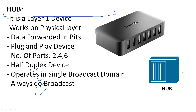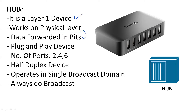A hub is a dumb device — it is called a dumb device — and it is a Layer 1 device which doesn't have any memory. It works on the physical layer, where all data is forwarded in the form of bits. It is also a plug-and-play device; you don't have to manually configure any single interface. There can be two, four, or six interfaces, and it is a half-duplex device, meaning multiple PCs cannot forward data at the same time.